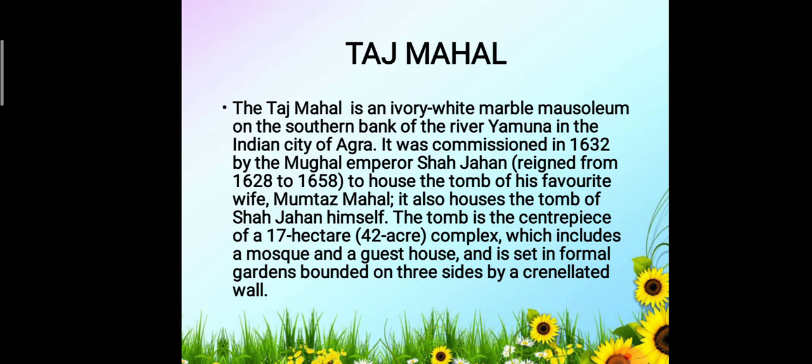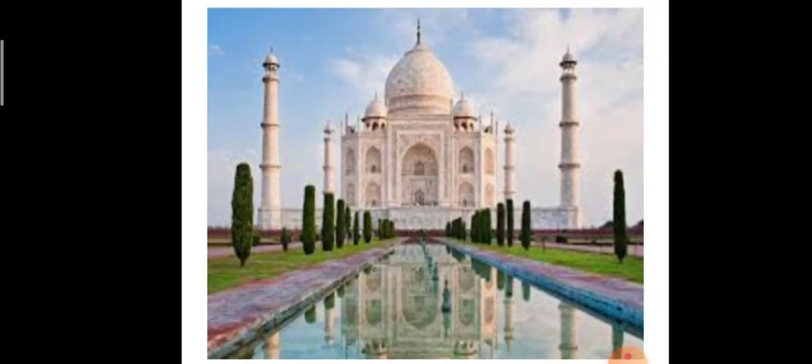Taj Mahal is one of the seven wonders of the modern world. It is a dream carved out of white marble, studded with gemstones. The Taj Mahal was built by Mughal Emperor Shah Jahan in memory of his beloved wife Mumtaz Mahal. It is located in Agra near the banks of the Yamuna river. It looks beautiful on a full moon night, as its reflection can be seen in the river. It took 22 years and 22,000 men to complete this magnificent structure.